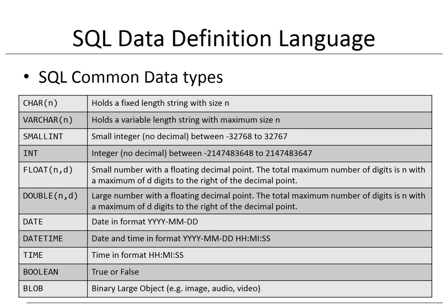An SQL table will have various columns, one per attribute type. For example, our SQL table 'product' can have columns such as product number, product name, product type, etc. Each of these columns will have a corresponding data type to represent the format and range of possible values. Here you can see some examples of commonly used SQL data types. CHAR(n) represents a fixed-length string with size n. VARCHAR(n) represents a variable-length string with maximum size n. SMALLINT represents a small integer with no decimal, between minus 32,768 to 32,767.